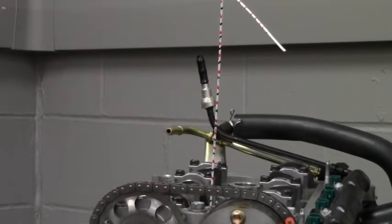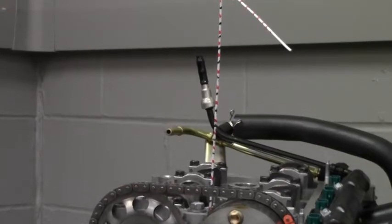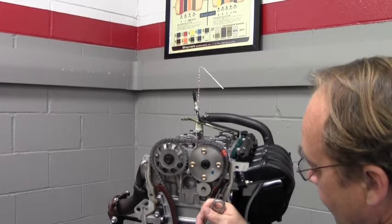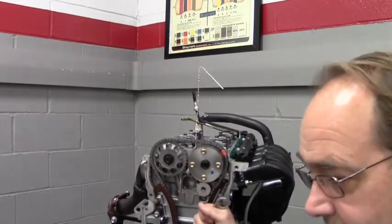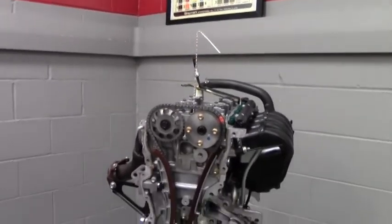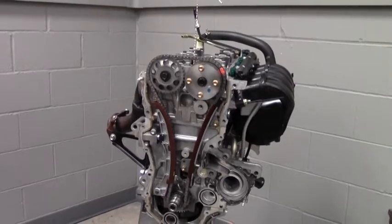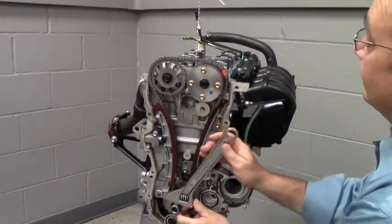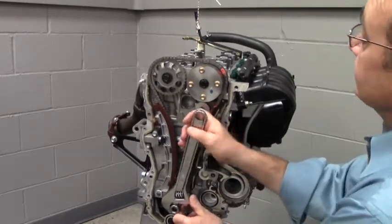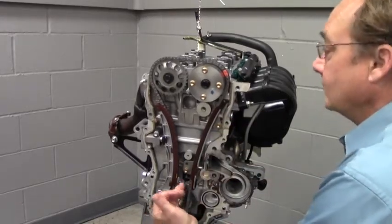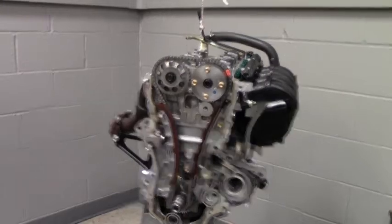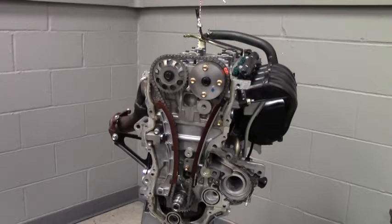But once I reach top dead center, note the amount of distance that I can rotate my wrench back and forth without that coat hanger moving at all. That means we don't know where true top dead center is because of the overlap of the crank versus the piston not moving. So there's a way of finding true top dead center. Let's mount a degree wheel onto the front of this engine and find true top dead center.